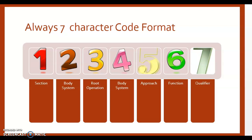When we're coding from the measurement and monitoring section, all of our procedure codes will start with the character value four. The body system choices for our second character will either be A for physiological systems or B for physiological devices.